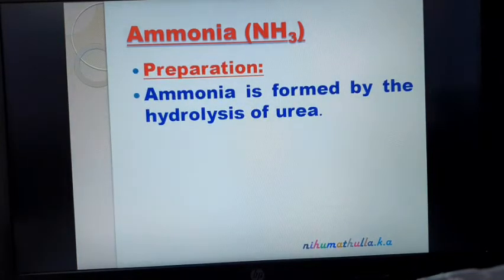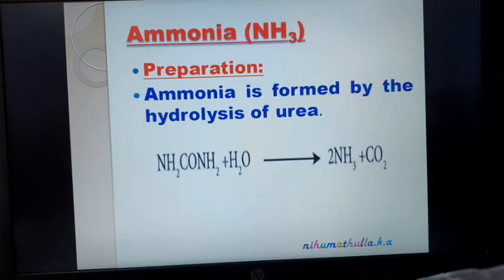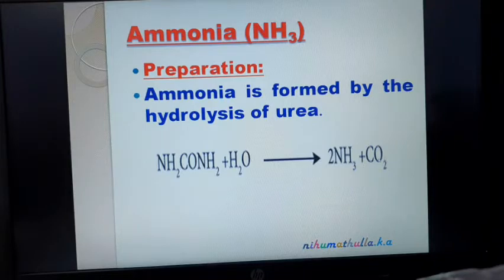Preparation. Ammonia is formed by the hydrolysis of urea. Urea is an example of a diamide and is used as a fertilizer. The molecular formula for urea is NH2-CO-NH2. It undergoes hydrolysis to give ammonia along with the liberation of carbon dioxide. This is the first method of preparation of ammonia — hydrolysis of urea.